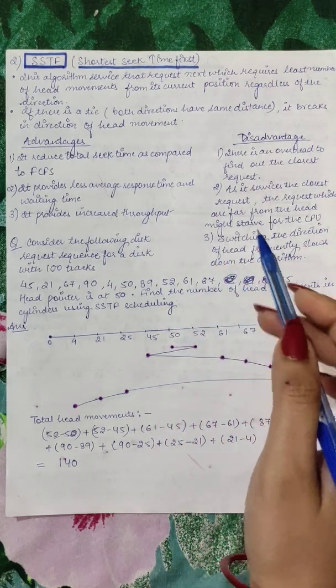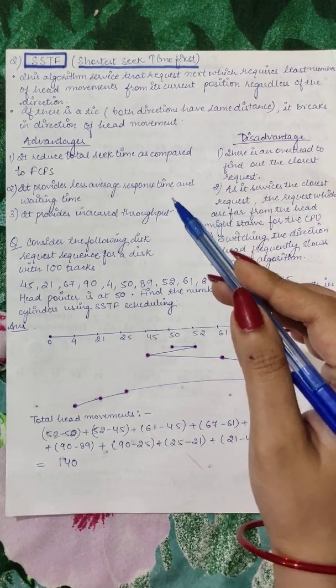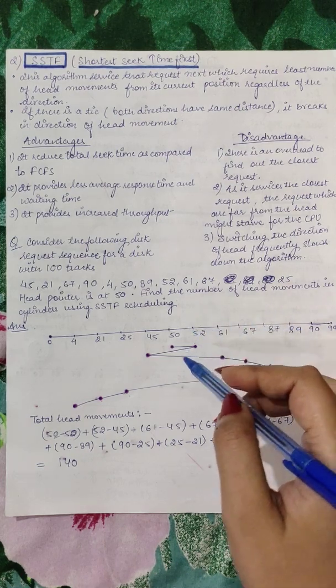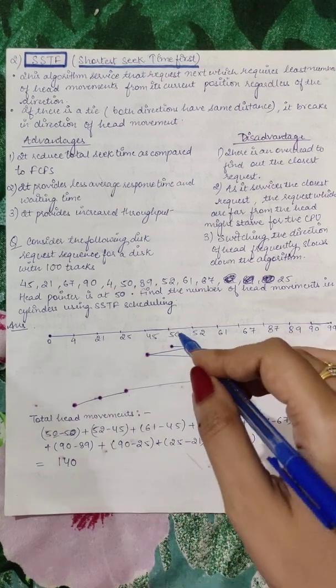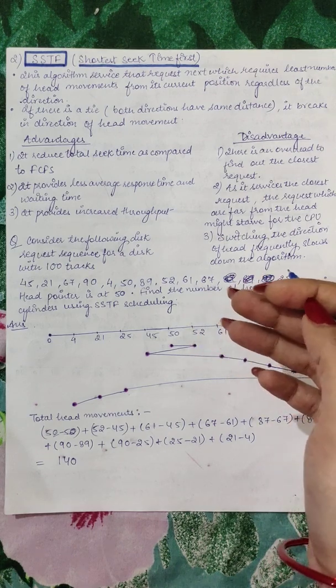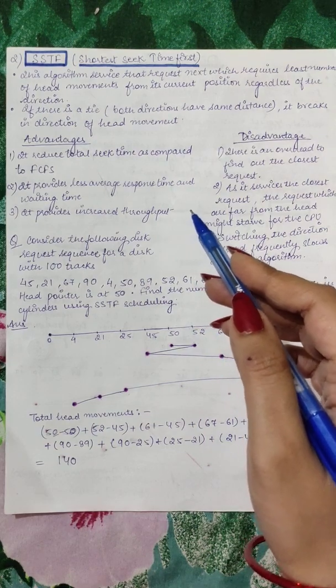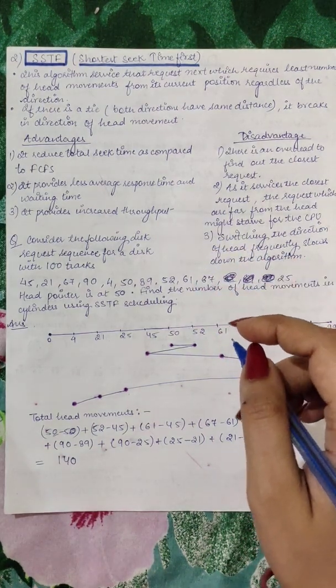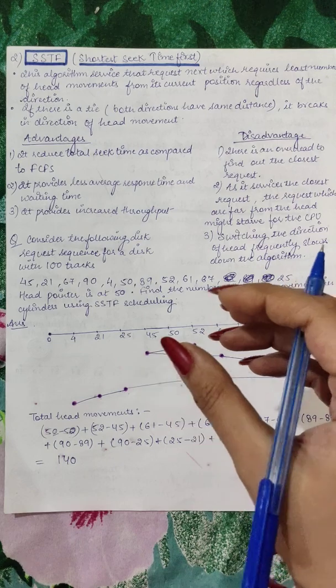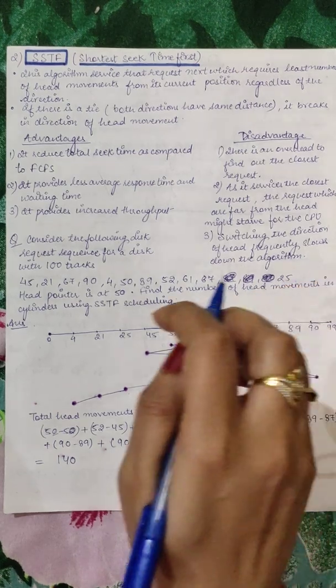So we have discussed some advantages and disadvantages. What is the advantage here? It reduces the total seek time as compared to FCFS. The total seek time will be reduced because the order has been arranged and the request number will be reduced. So the total seek time will be reduced. It provides less average response time and waiting time. Waiting time will be reduced because based on which time is reduced, we are going to service it. That means waiting time will be reduced.